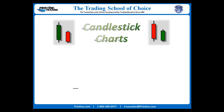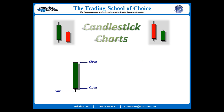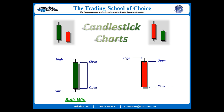There are four pieces of information contained in every candlestick: an opening price, the low for the time period, the closing price, and the high for the time period. If the closing price is above the opening price, it is colored green, and we consider the candle to be won by the bulls. Likewise, if the opening price is above the closing price, it is colored red, and we consider the period of time to be won by the bears.